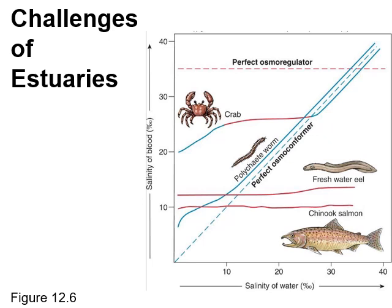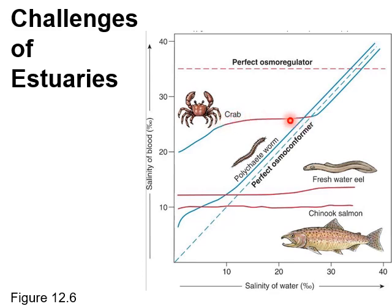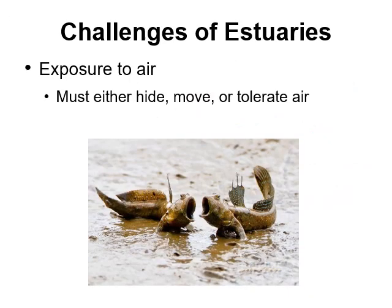There are perfect osmoconformers, like many worms, and perfect osmoregulators, like many fishes. Some organisms are in between — like crabs, which can regulate across a mid-range of salinity, say 10 to 25 parts per thousand, but beyond that range their internal salinity starts to drift. Things like eels and salmon can regulate across all salinities.